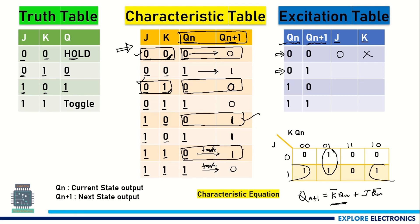These two cases we need to take now. For the 0→1 transition, the J and K values are 1,0 and 1,1. Looking at these two, J value is 1 — so let me write J as 1. And what is K? K is changing from 0 to 1, so it is X.